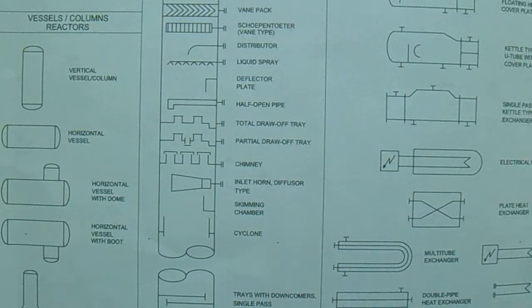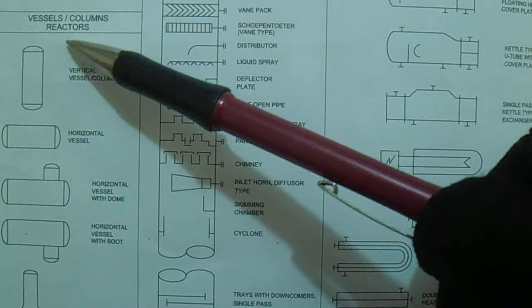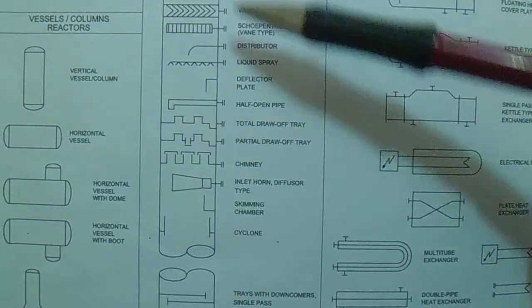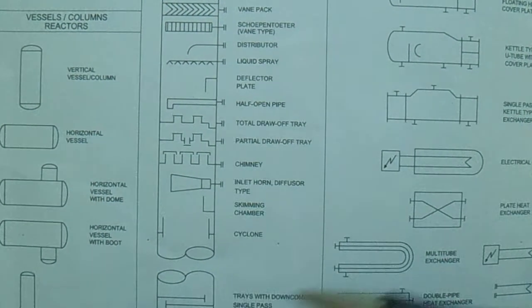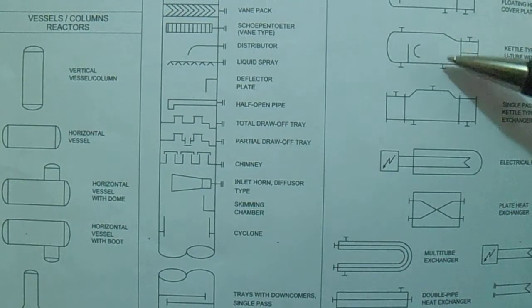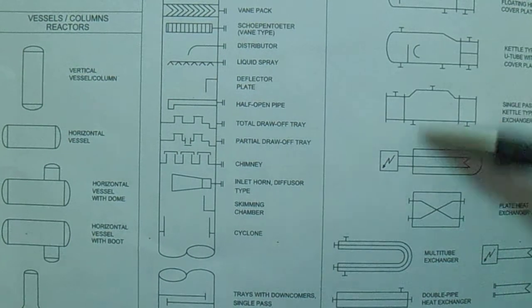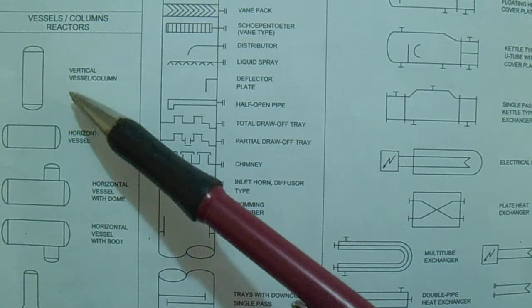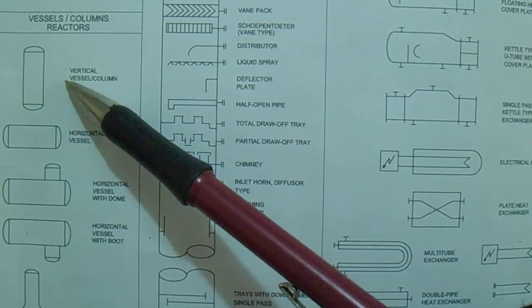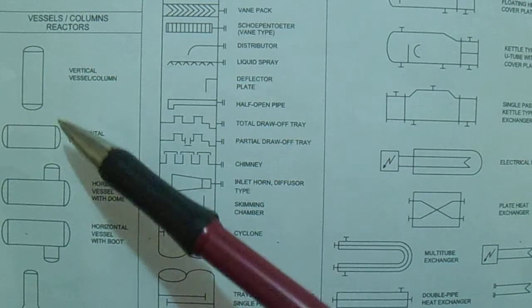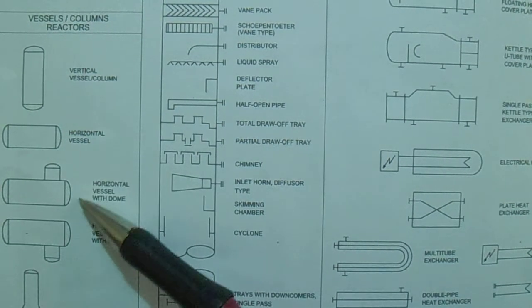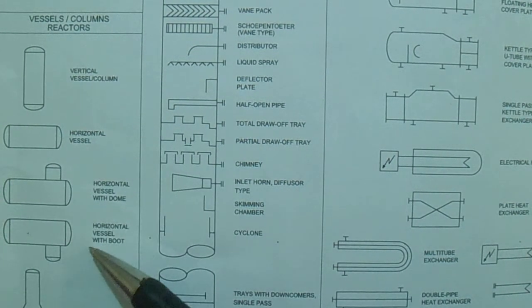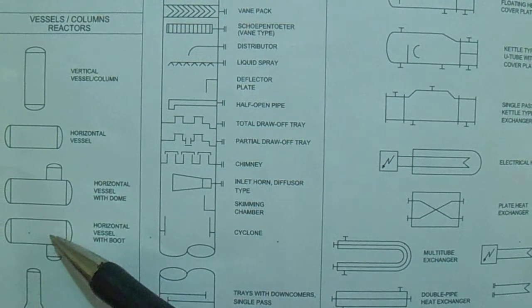Next is the vessel/column/reactor section. We have a vertical vessel, a horizontal vessel with dome, and a horizontal vessel with boot.